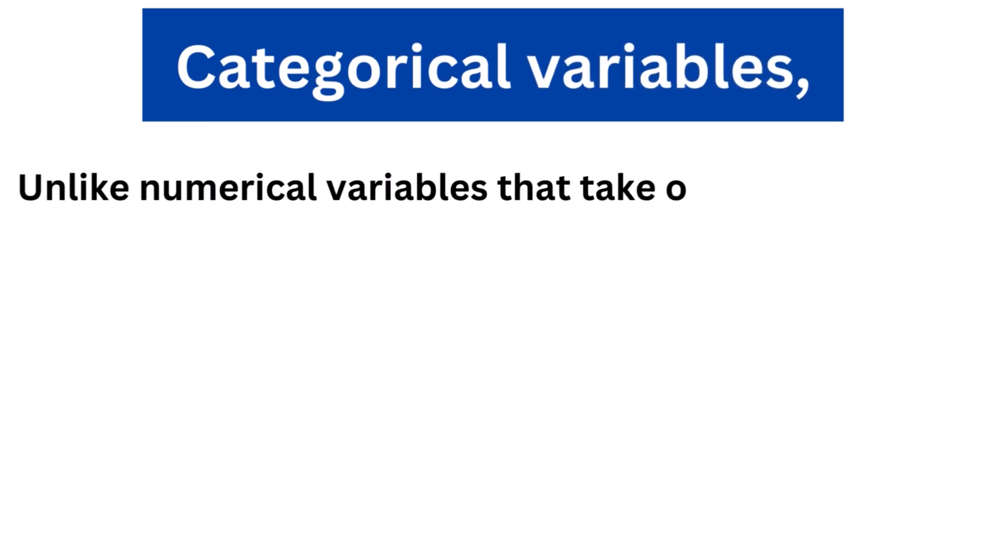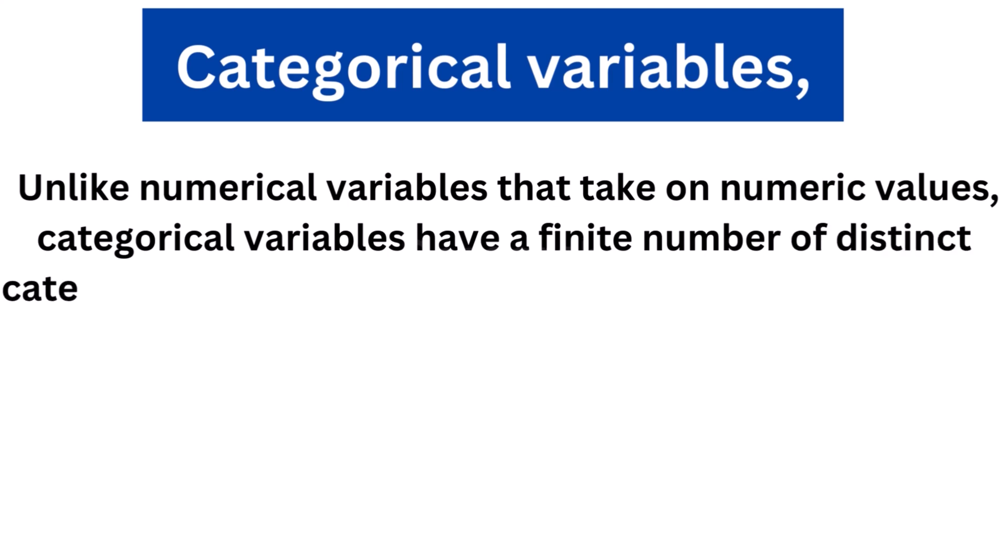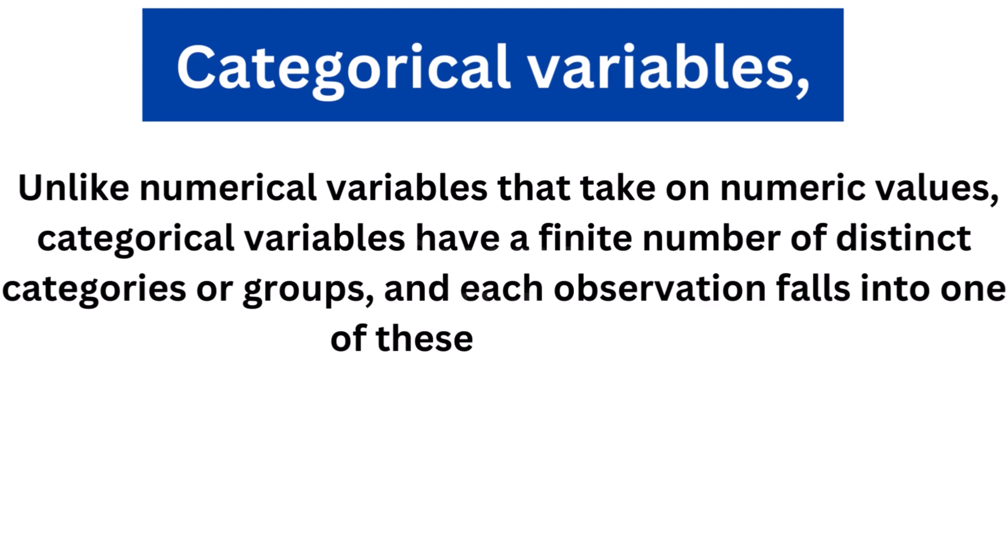Unlike numerical variables that take on numeric values, categorical variables have a finite number of distinct categories or groups and each observation falls into one of these categories.